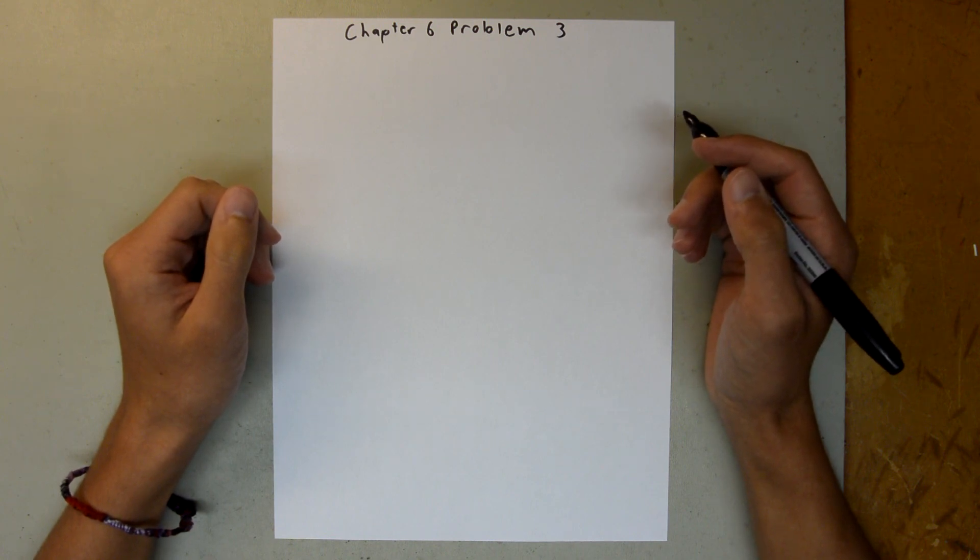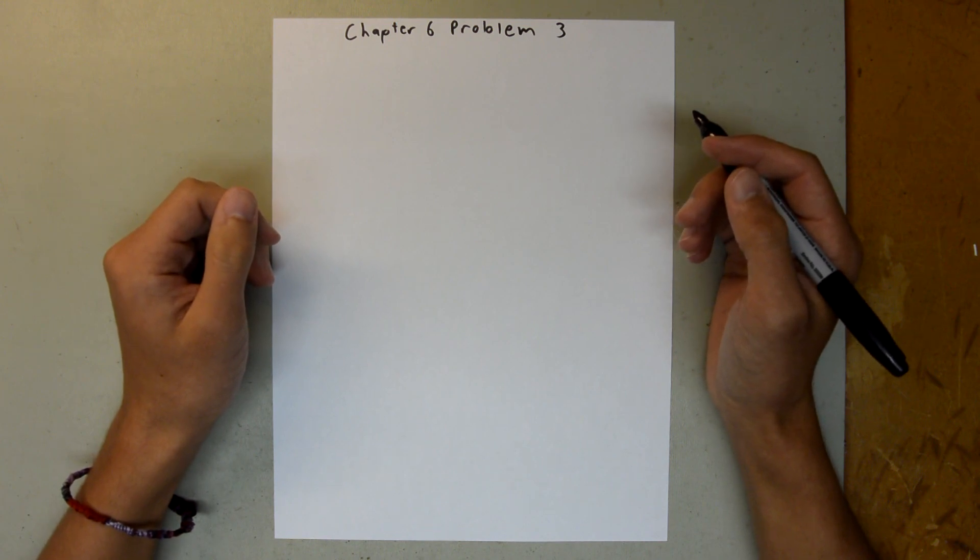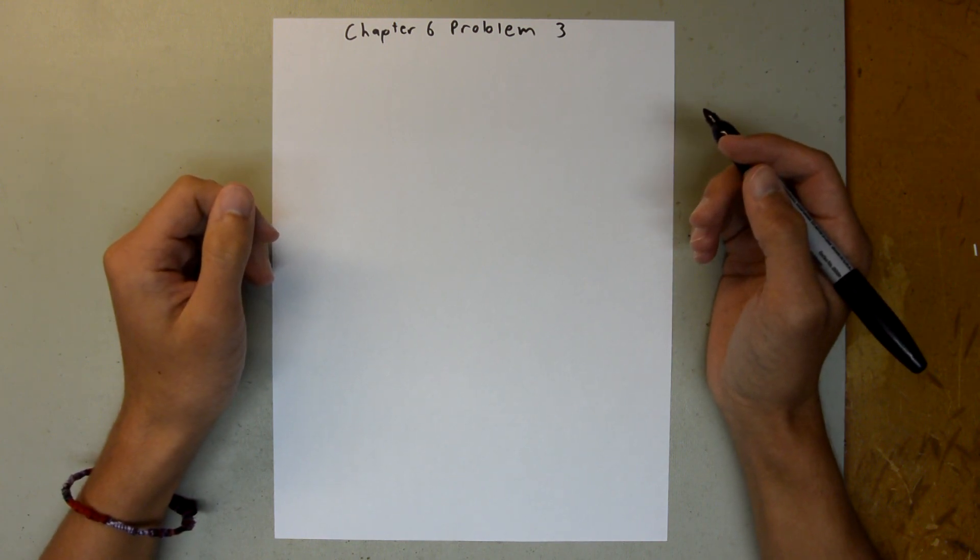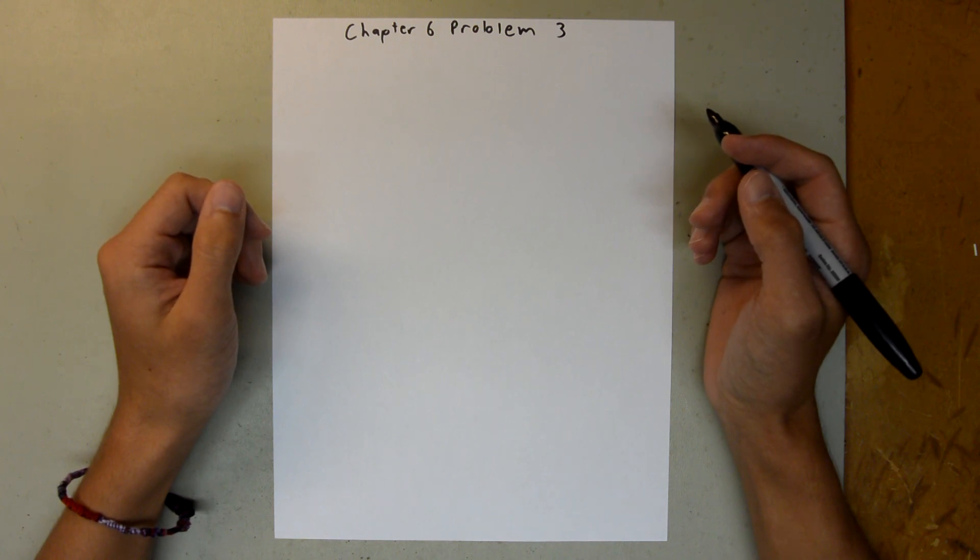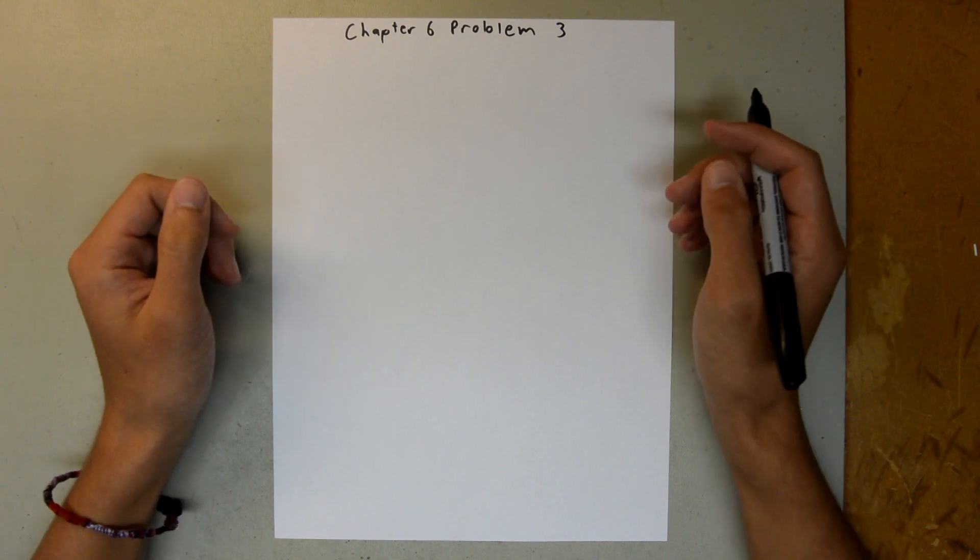Chapter 6 is all about force and motion, Part 2. And in particular, Problem 3 talks about some box that is pushed across a horizontal floor. We are given the force and the mass of the box. We are told the coefficient of kinetic friction. And we are asked to find the magnitude of the frictional force and the box's acceleration.